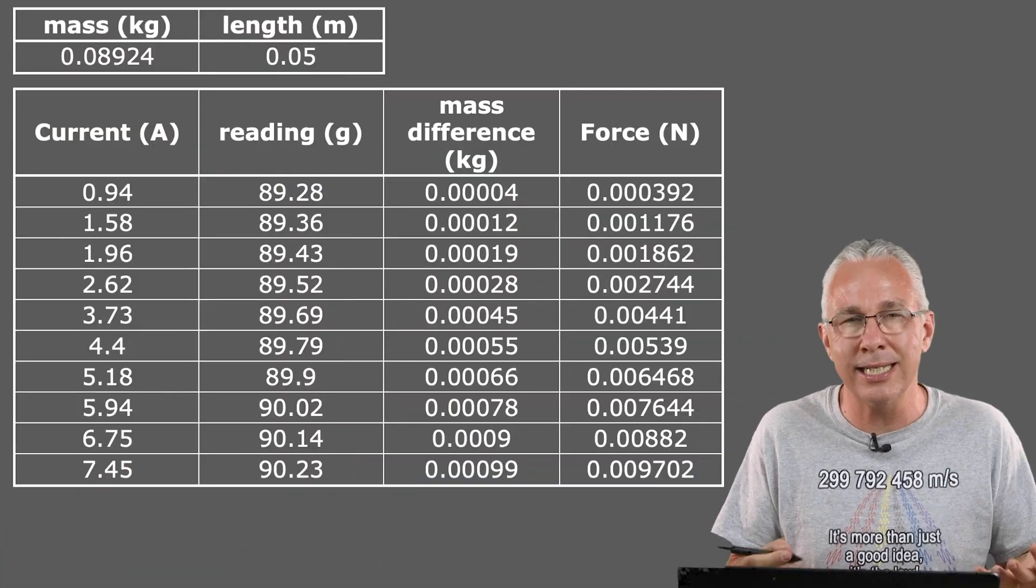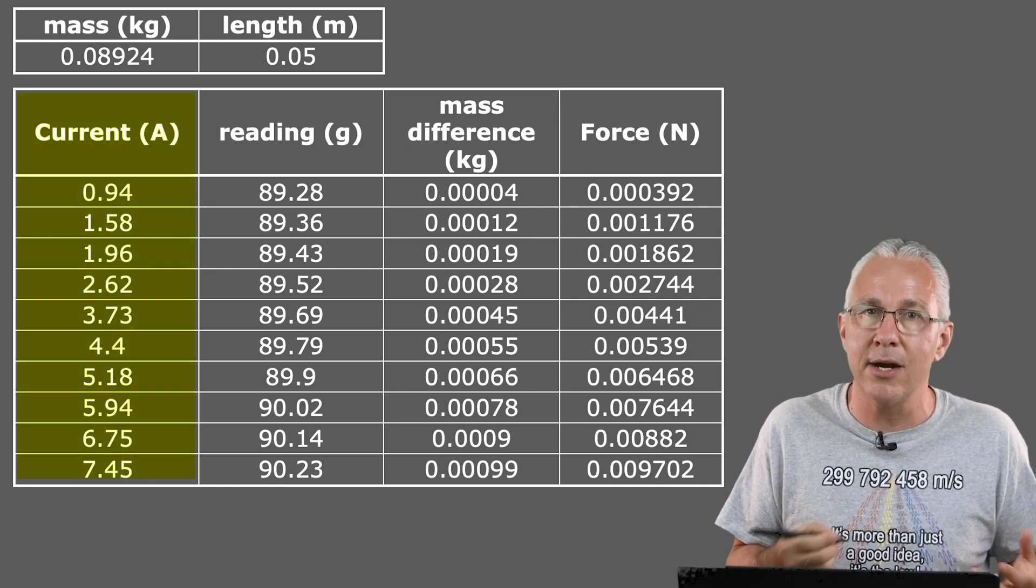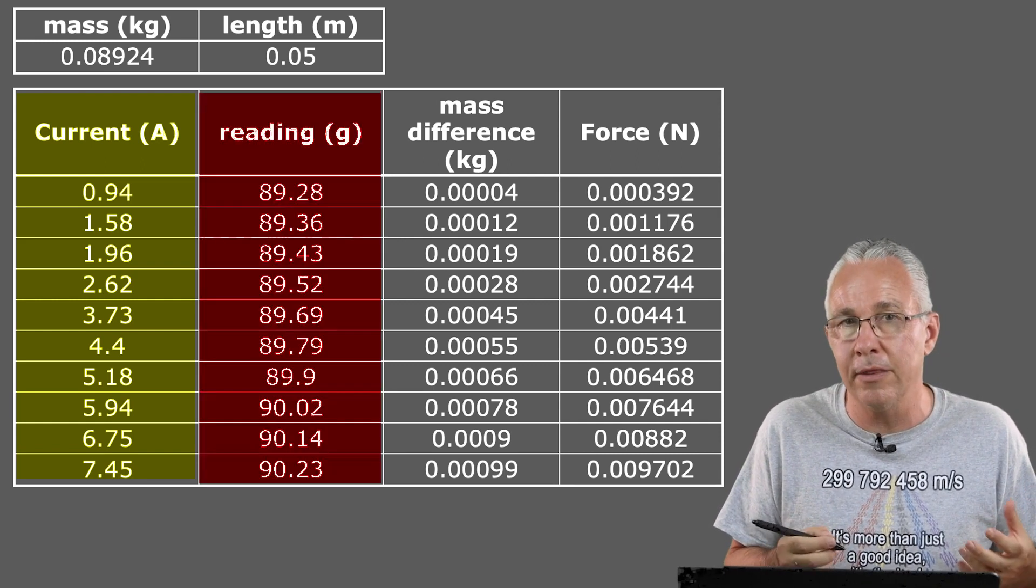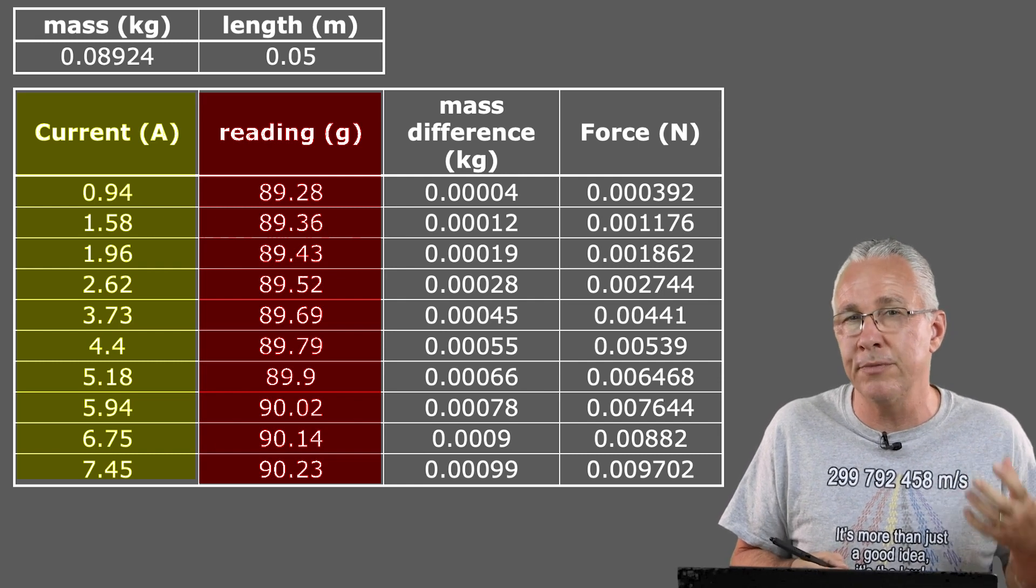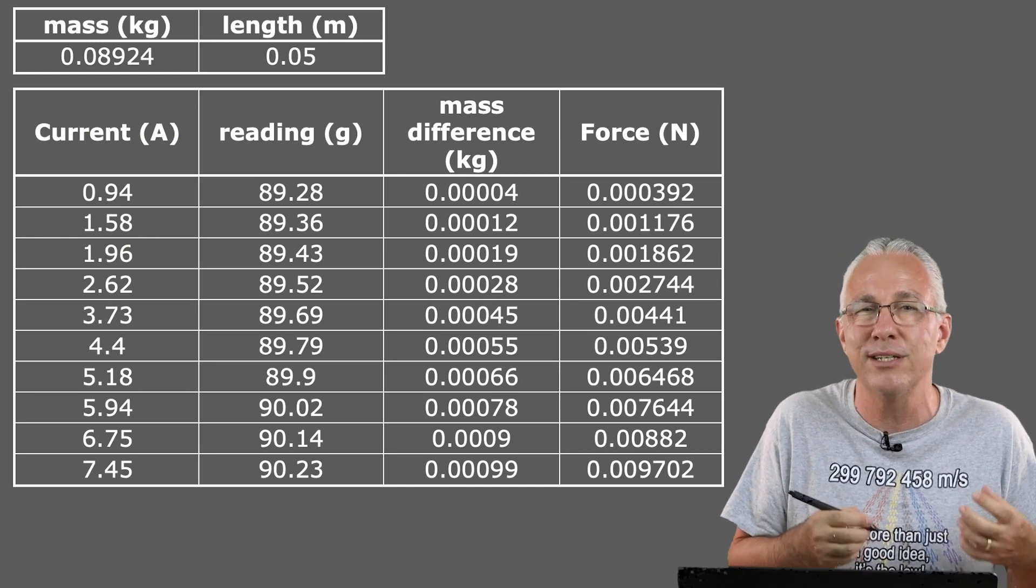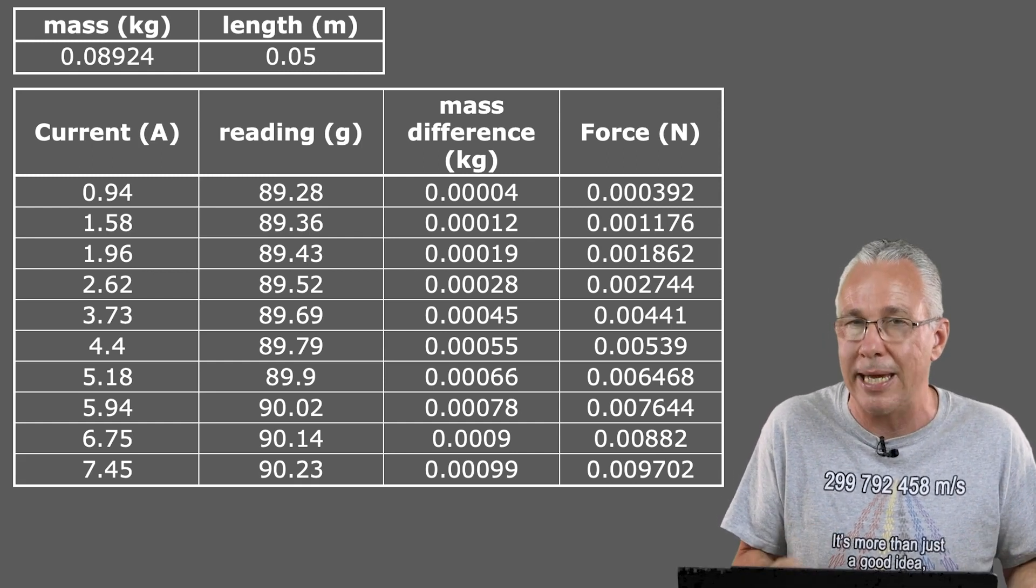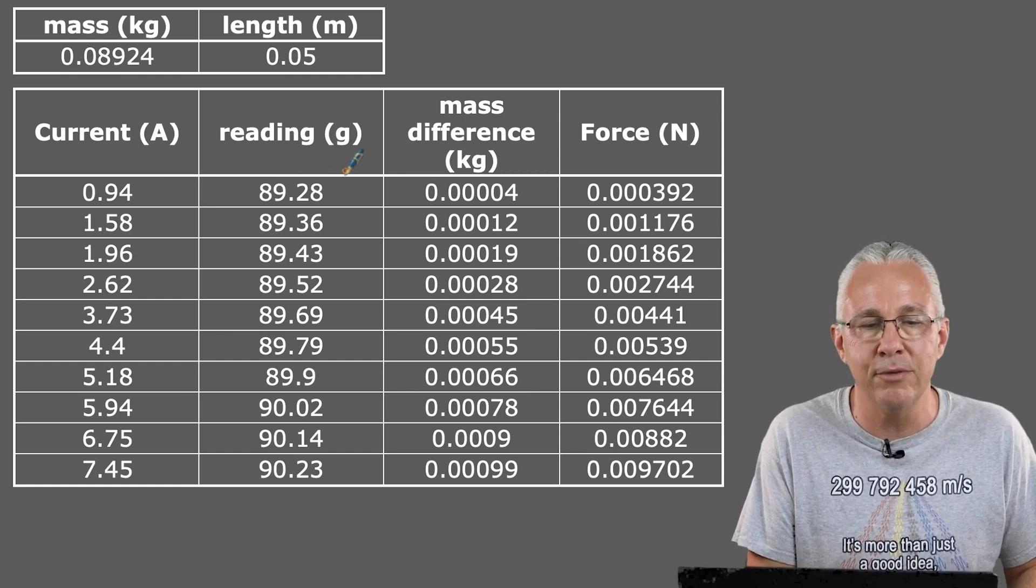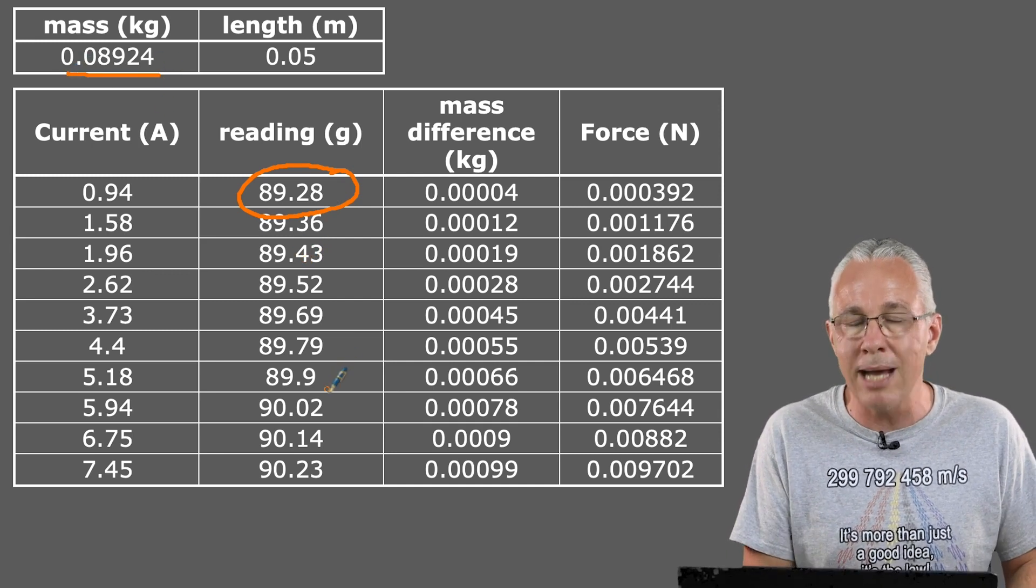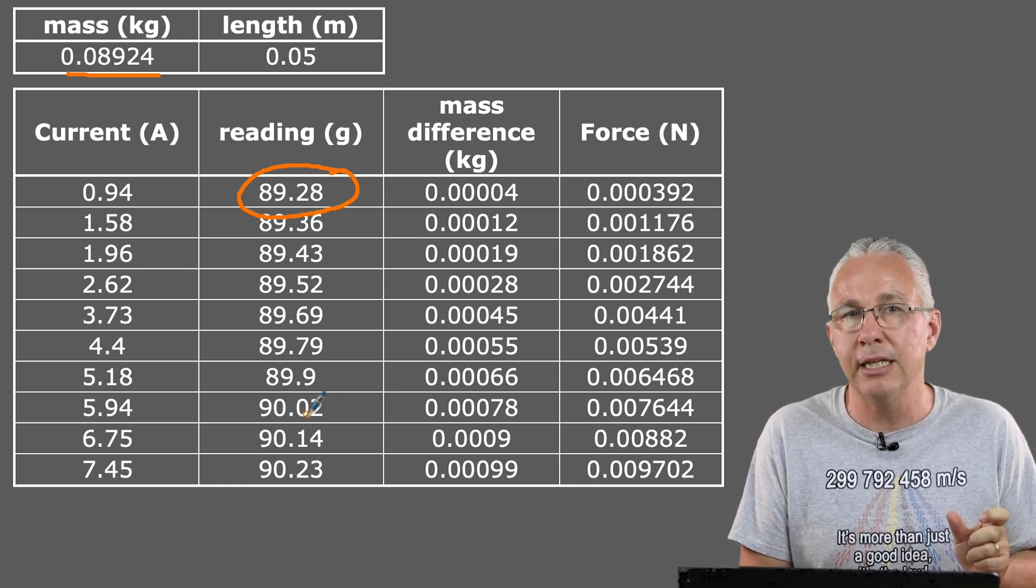Now I've collected my data, and you can see the results in the table behind me. The first column is the obvious independent variable, it's the current that I recorded, and of course I have the second column, the dependent variable, the reading on the scales. But I need to do a couple of things because the reading of the scale is due to two things: it's the force due to the mass acting on the scales and of course the force due to the magnetic field effects, and we need to just look at the magnetic field effects if we're going to try to determine the strength of the magnetic field. So what I've done here is our reading is 89.28, and the first thing I need to do is I need to subtract the actual mass, and that gives me the mass reading just due to the magnetic field force effect.